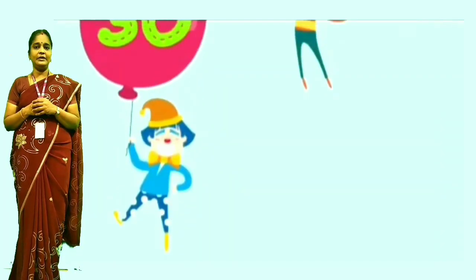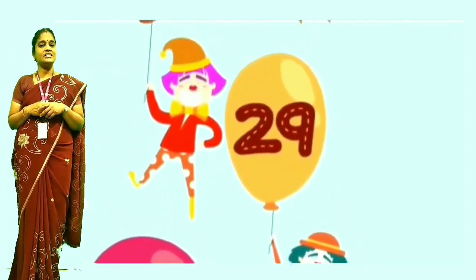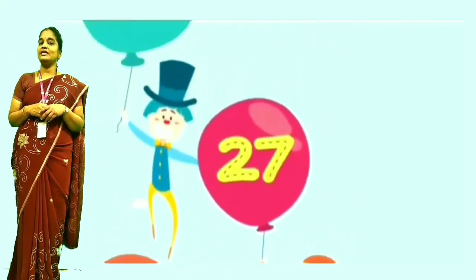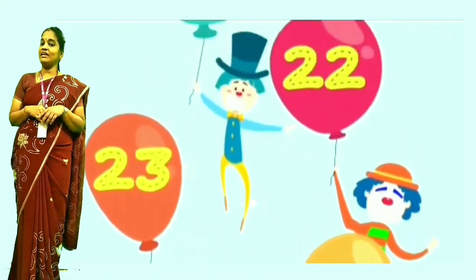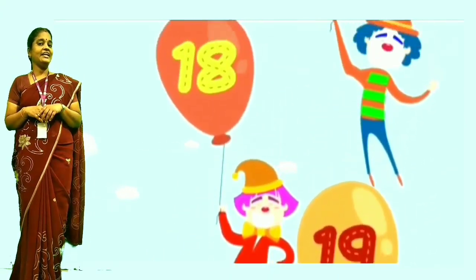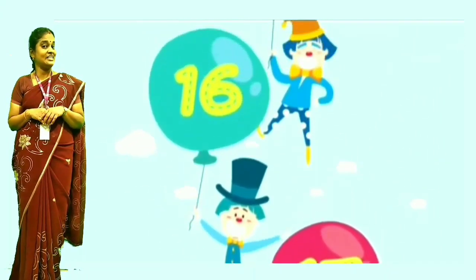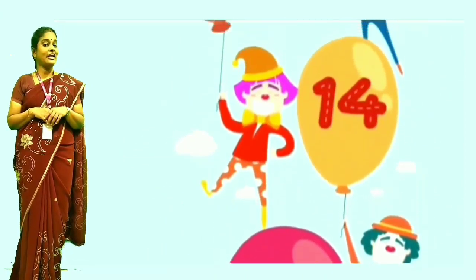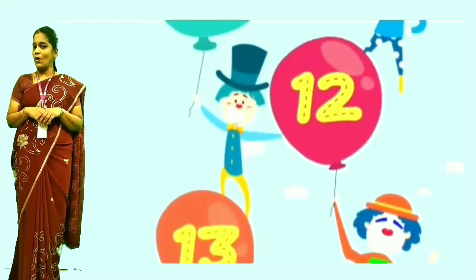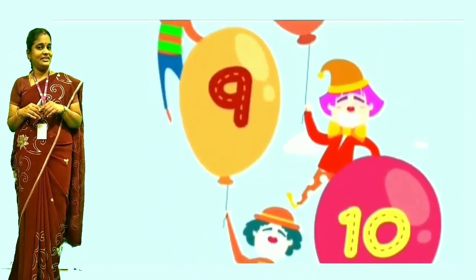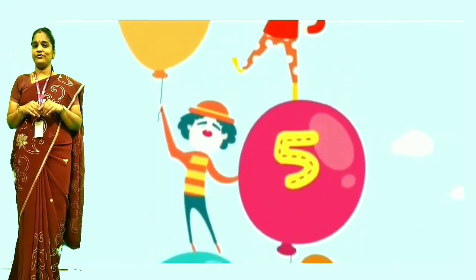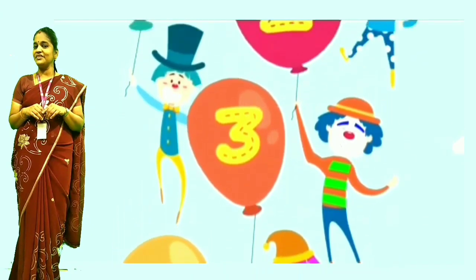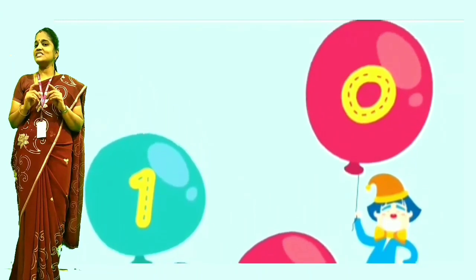This is backward counting: 30, 29, 28, 27, 26, 25, 24, 23, 22, 21, 20, 19, 18, 17, 16, 15, 14, 13, 12, 11, 10, 9, 8, 7, 6, 5, 4, 3, 2, 1, 0.